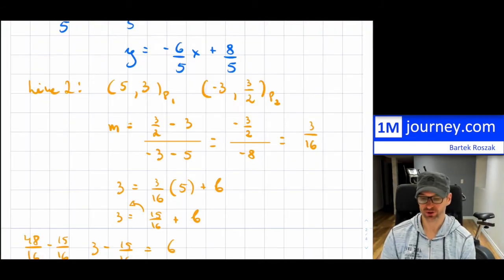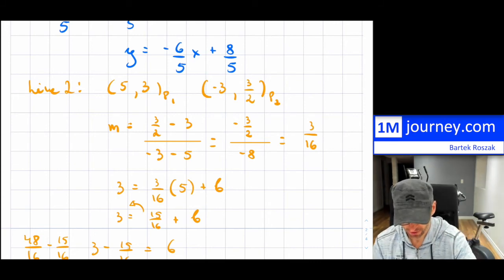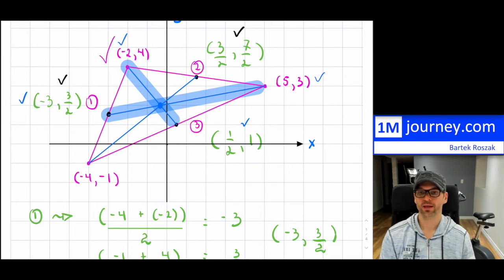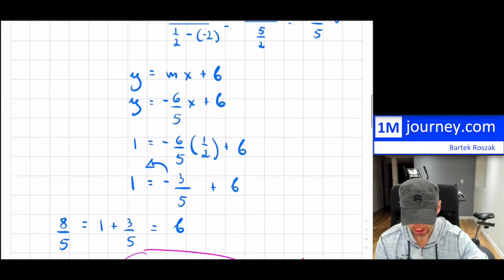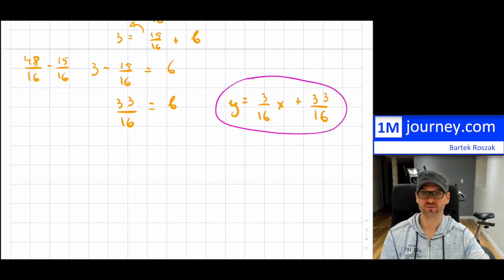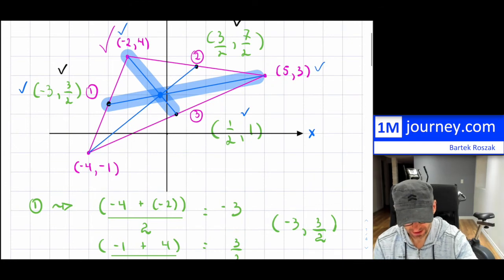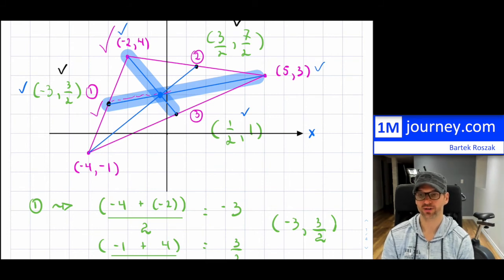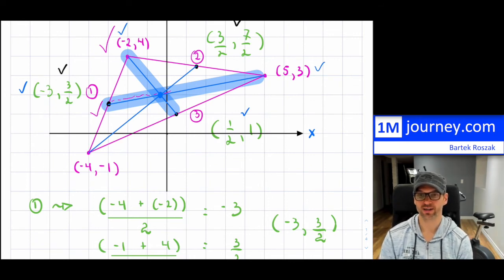So we have our first line — the median going in this direction with a negative slope — and the y-intercept was eight over five. Our second line has a positive slope of three over sixteen, and the y-intercept is 33 over 16. Now they intersect at the centroid. I don't need to find the third median — I just need these two lines to find that particular centroid.